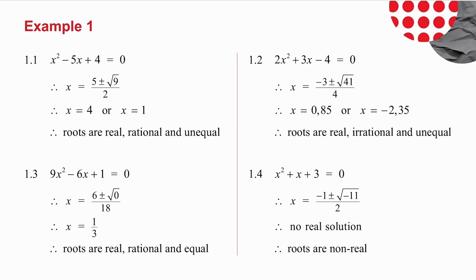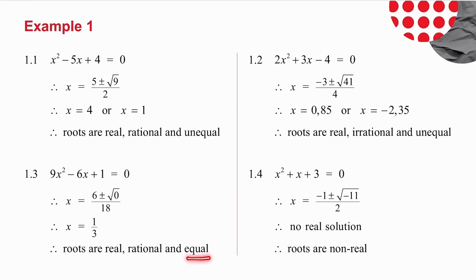In 1.3, when I use the quadratic formula, you notice that you get plus or minus the square root of 0. Taking 6 plus 0 over 18 or 6 minus 0 over 18 gives exactly the same answer. So the roots are real, rational, and although there were two expressions — plus 0 or minus 0 — they both gave exactly the same thing. In other words, the roots were equal.